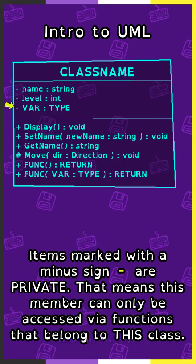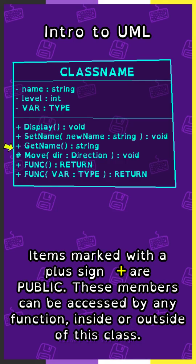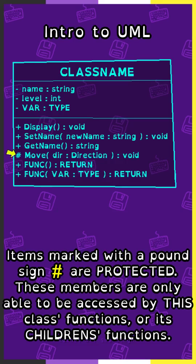Items marked with a minus sign are private — that means this member can only be accessed via functions that belong to this class. Items marked with a plus sign are public; these members can be accessed by any function inside or outside of this class. Items marked with a pound sign are protected; these members are only able to be accessed by this class's functions or its children's class functions.